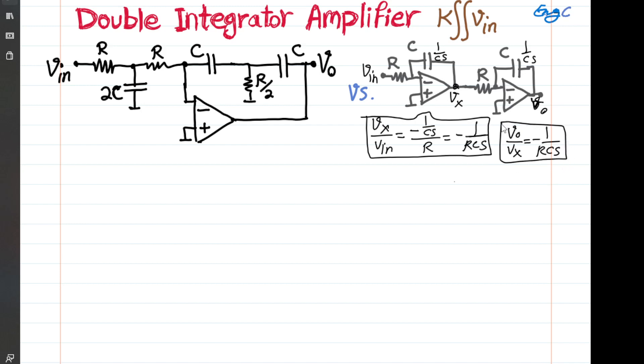We can get Vout over Vin, the transfer function, is minus 1 over CS squared. And minus minus becomes plus. So 1 over R squared CS squared. And that is double integrator basically.